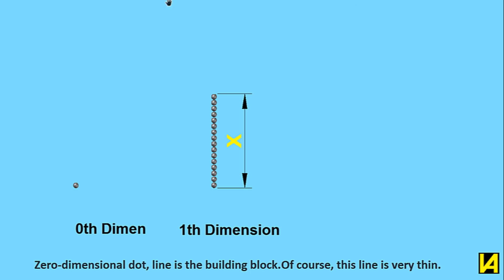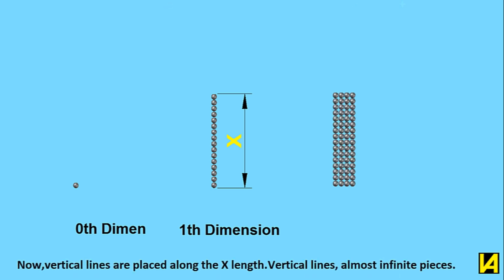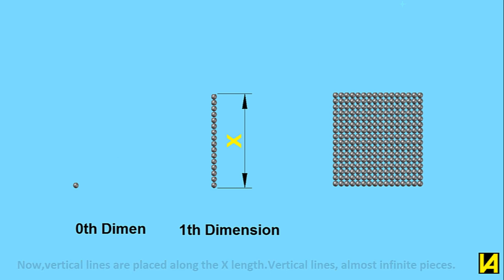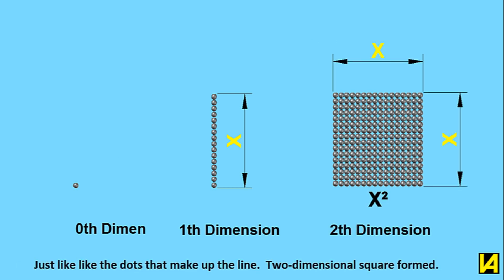Now vertical lines are placed along the X length, vertical lines almost infinite pieces, just like the dots that make up the line. Two dimensional square formed.